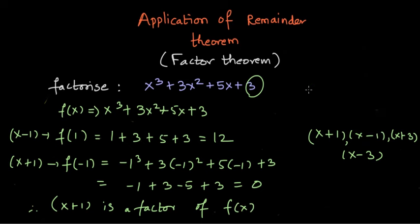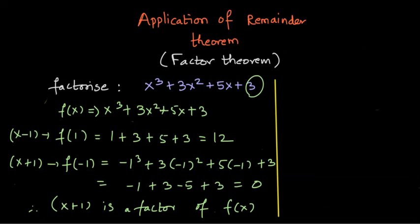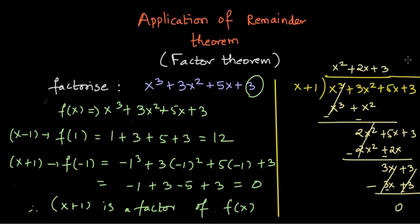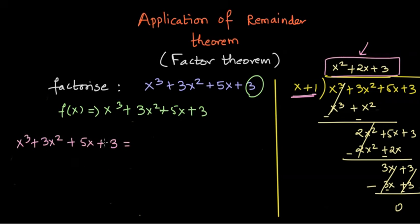Now that we know (x + 1) is a factor, we use long division to find the other factor. Dividing x³ + 3x² + 5x + 3 by (x + 1), we get the quotient x² + 2x + 3. So we can write x³ + 3x² + 5x + 3 = (x + 1)(x² + 2x + 3). That is how we apply the remainder theorem to completely factorize a given expression.